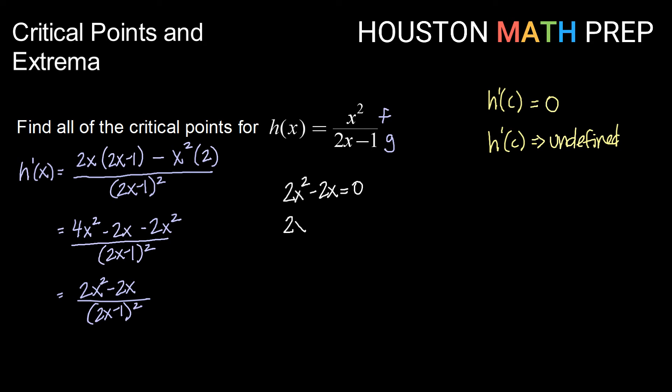Solving this, we'll first factor out our common factor of 2x. That leaves behind a factor of x minus 1, setting those separately equal to 0. And then solving, I get critical points at x equals 0 and 1.